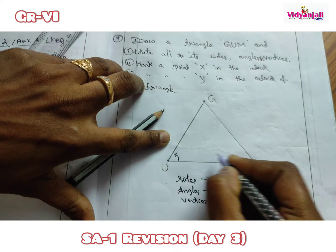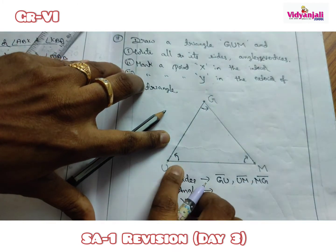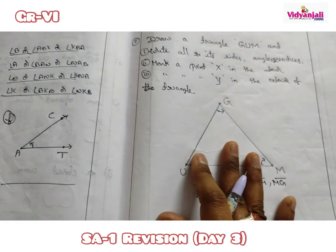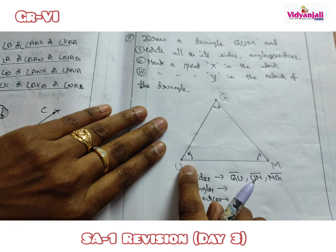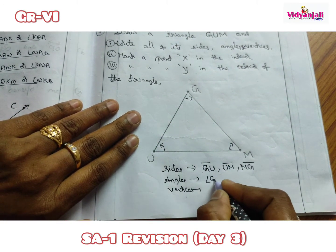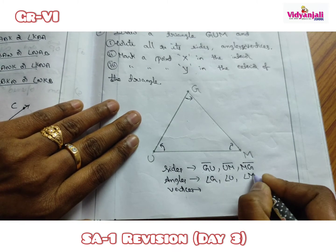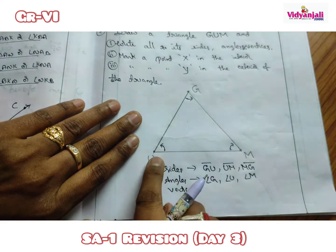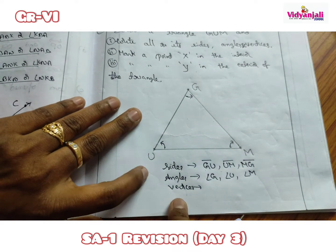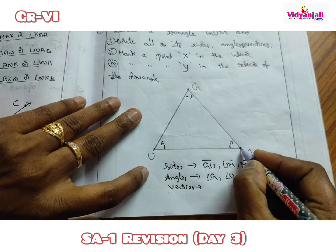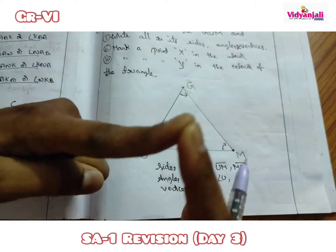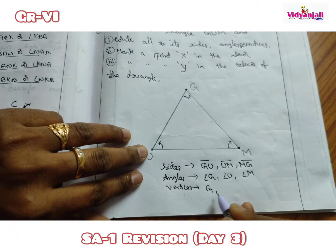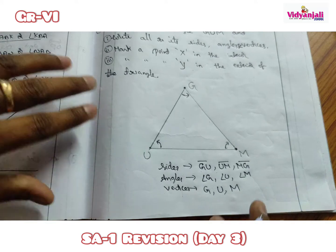The three angles are angle G, angle U, and angle M — formed where two line segments meet. The three vertices are points G, U, and M — the corners where two line segments meet.